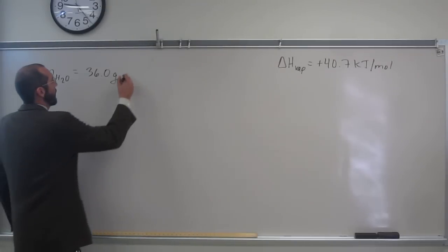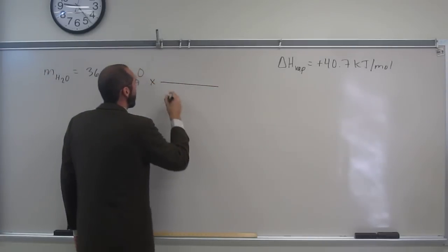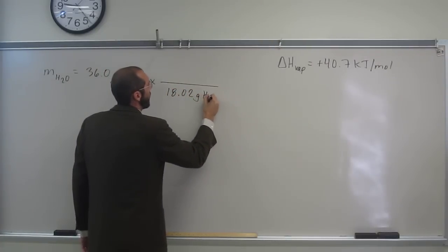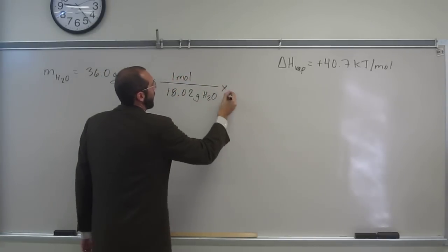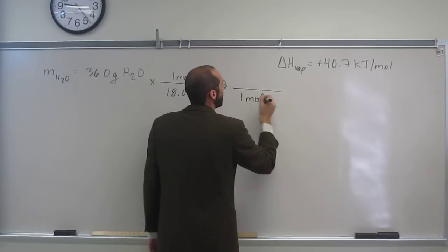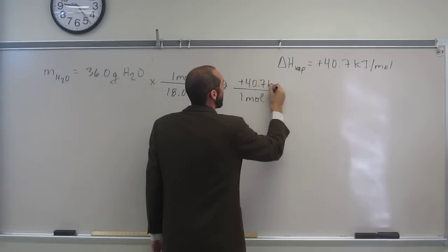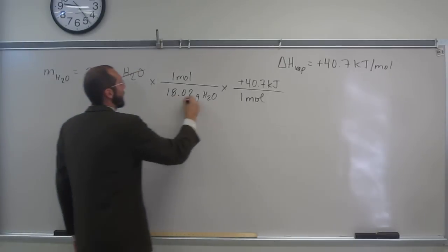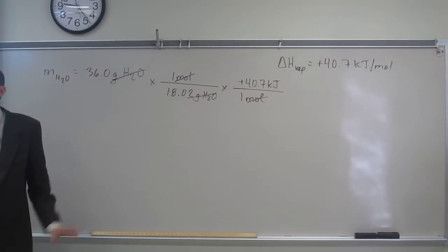So, 36.0 grams of water. We know the molar mass of water. 18.02 grams of water for one mole. And then we have this conversion factor up here. So, one mole of water is plus 40.7 kilojoules. So, we should be able to cancel, giving us energy. Is everybody okay with that?